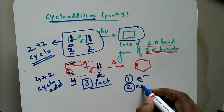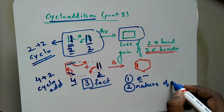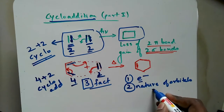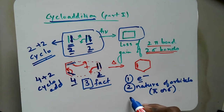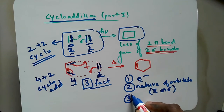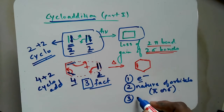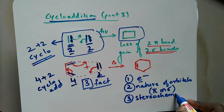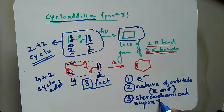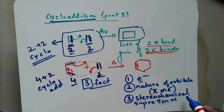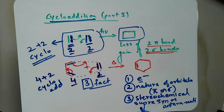The second important factor is the nature of orbitals undergoing change — it can be a pi orbital or a sigma orbital. The third important factor is the stereochemical mode, which is very important. It can undergo suprafacial — meaning syn addition — or it can undergo antarafacial — which is anti addition. I will describe this factor in detail in the videos that are coming ahead.